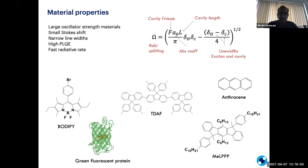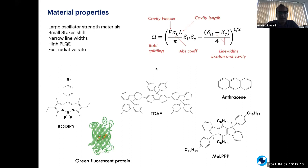We started looking into all the properties required and narrowed it down to four or five material properties: you need large oscillator strength, a small Stokes shift for low thermalization losses, really narrow linewidths, large radiative rates and high PLQIs, and of course a fast radiative rate — so essentially minimum non-radiative losses. One way to figure out if a material strongly couples to the cavity is by Rabi splitting. To get high Rabi splitting it depends on cavity quality, material absorbance — that's why we look for large oscillator strength materials — cavity length, and narrow linewidths of absorbance.